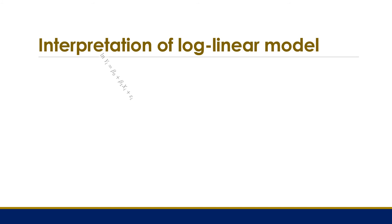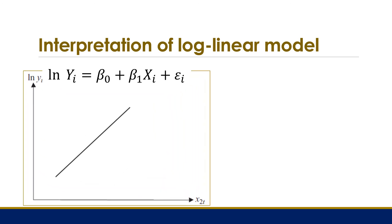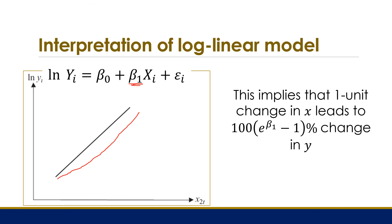Let's consider the interpretation of nonlinear models that are linearized using logarithms. We start with the log-linear model, where after transformation the relationship between the logarithm of y and x is linear. The interpretation of the coefficient beta 1 is: one unit change in x leads to 100 × (e^(beta 1) − 1) percent change in y. Notice that the change in y is expressed as a percentage of the unit change in x.